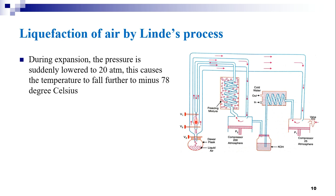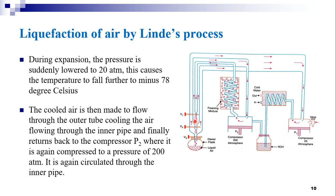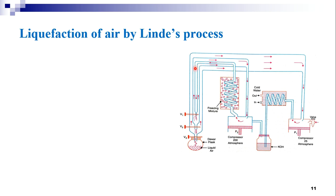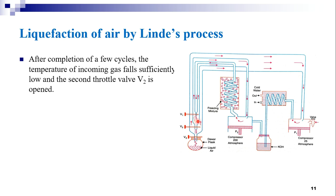During the expansion, the pressure is suddenly lowered to 20 atmospheres, which causes the temperature to fall further to minus 78 degrees Celsius. The cooled air then flows through the outer tube cooling the incoming air in the inner pipe, and finally returns back to the compressor P2 where it is again compressed to 200 atmospheres and recirculated through the inner pipe. After completion of a few cycles like this, the temperature of the incoming gas falls sufficiently low and the second throttle valve V2 is opened.